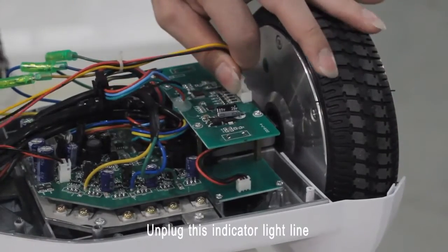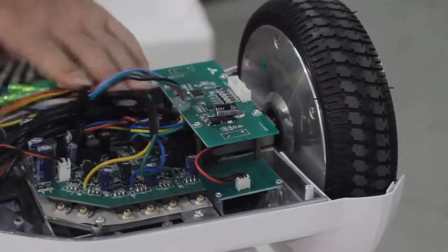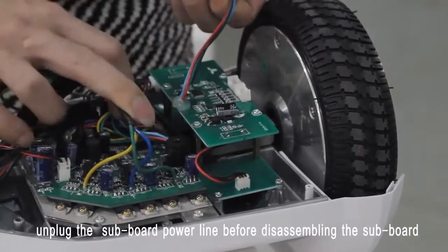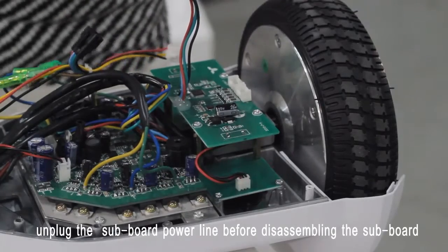Unplug this indicator light line. This is the subboard's power line. To avoid a short circuit, unplug the subboard's power line before disassembling the subboard.